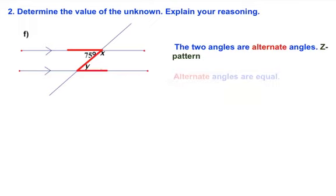And a piece of information that is going to help us is that alternate angles are equal. And so that means that this angle Y is equal to 75 degrees.